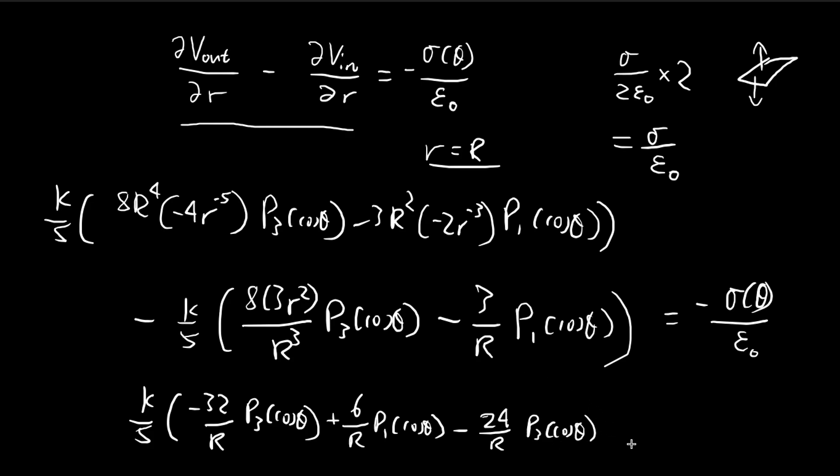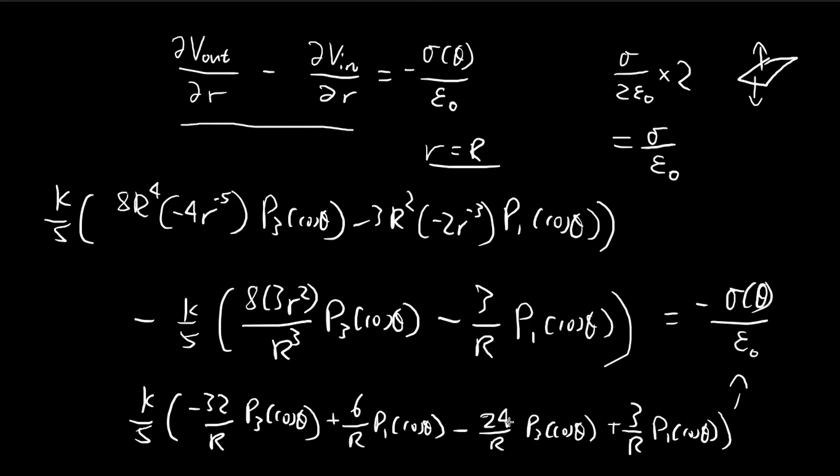So there are two negative signs, so plus 3 over R, P1 cosine of theta. And this is equal to this. And so let's just group the terms together. So we get K over 5. So for the R terms, we have, so I'm just going to, let's move the negative over to this side.